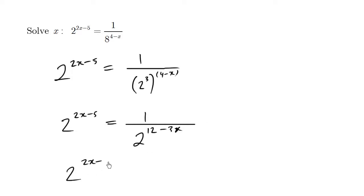So 2 to the 2x minus 5 equals 2 to the negative 12 minus 3x. So I'm just copying this down here, but sticking a negative sign there. And it's very important that you have these brackets, otherwise I'll be wrong.